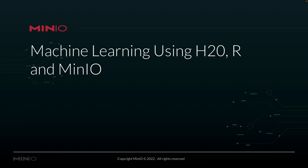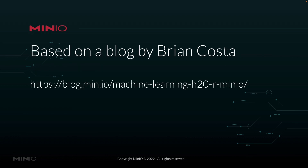This short-form course is all about machine learning using H2O, R, and MinIO. What we're going to show you in this course is really how MinIO can be used as the data layer for all of your machine learning tools. In this case, we're using H2O and R. Both of those connect very easily with S3, and since MinIO is an S3-compatible data layer, it makes it very easy for us to use MinIO as a drop-in replacement. This course is actually based on a blog by Brian Costa, who is our lead on all things machine learning and artificial intelligence here at MinIO, and he has written a blog on how to do this as well. I highly recommend reading his blog — it goes into a lot more detail on how H2O and R work.